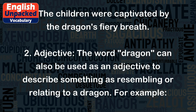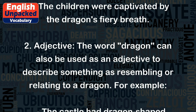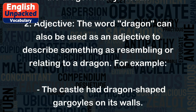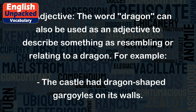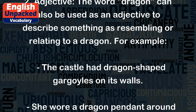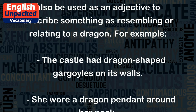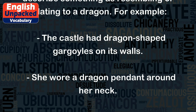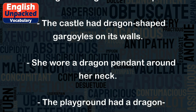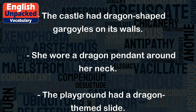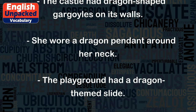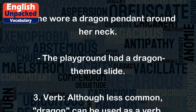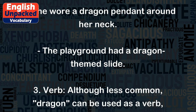2. Adjective: The word 'dragon' can also be used as an adjective to describe something as resembling or relating to a dragon. For example, the castle had dragon-shaped gargoyles on its walls. She wore a dragon pendant around her neck. The playground had a dragon-themed slide.